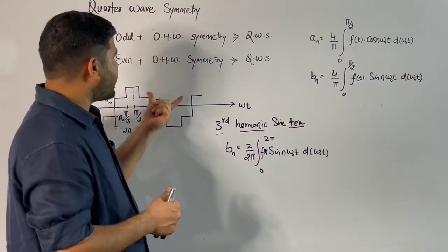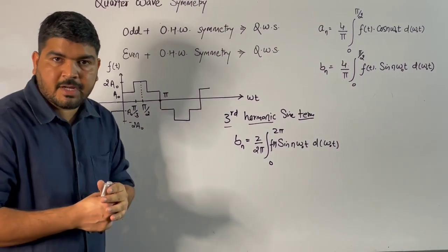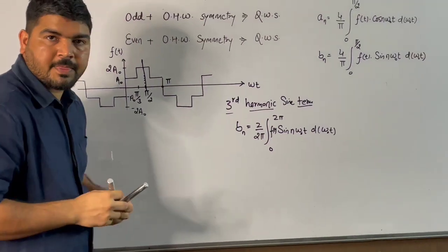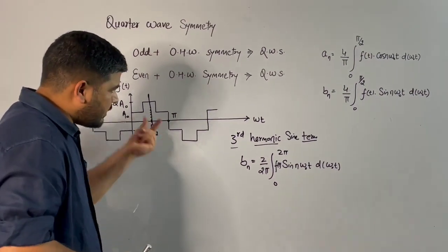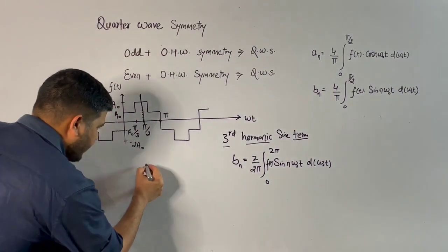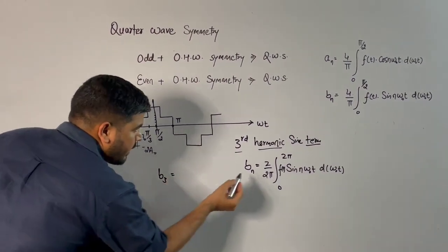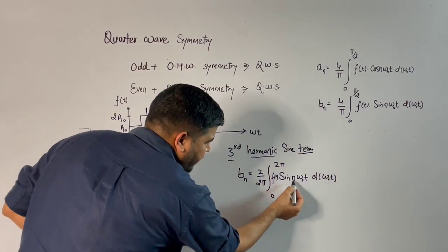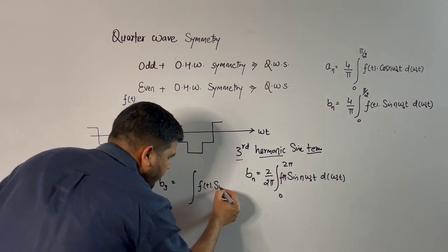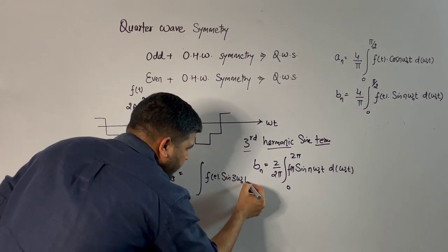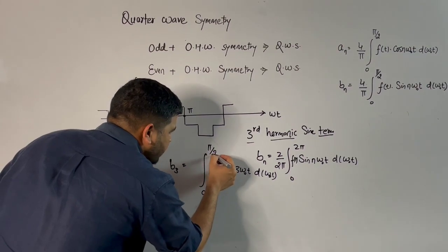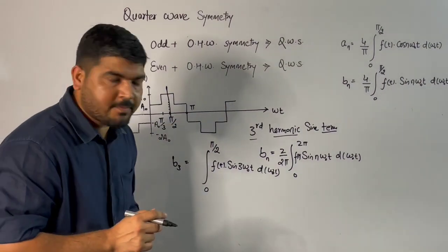What you can do instead is — since the signal has quarter wave symmetry, you can take one quarter of the wave and apply the formula only in that quarter. Let's say you want to calculate V3. Putting n equal to 3, it will be the integration of f(t) times sine of 3·ωt d(ωt). You integrate only under one quarter, which means from 0 to π/2 radians.